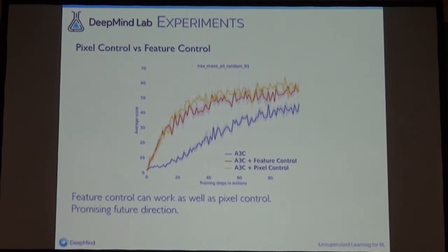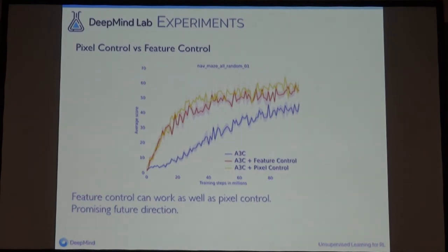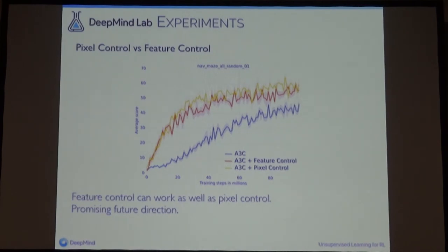Feature control is the idea of controlling the internal agent features themselves. The auxiliary policies try to maximize the activation of the output of the agent's convolutional network — learning a per-activation policy to maximize these signals. This is a harder optimization problem, but we can get it to work as well as pixel control. Here the yellow curve is pixel control and the orange curve is feature control, performing comparably. This could be a really interesting future direction, since the meaning of these activations could have quite interesting semantic effects.